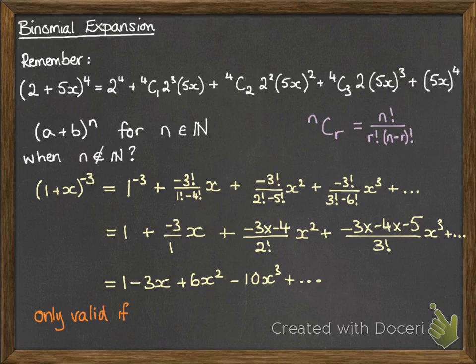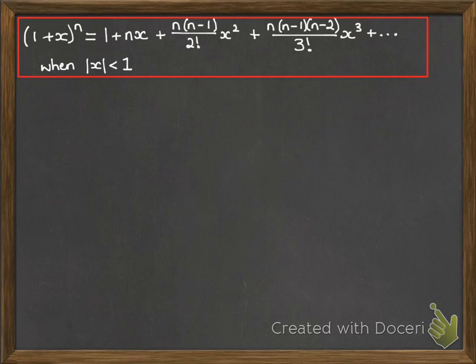Now we had restrictions on it last year, we have restrictions on it this year as well. This is only valid if the modulus of x is less than 1, because those higher powers of x need to become insignificant for us to be able to ignore them. So like the 10x cubed, and then whatever comes next as x to the power of 4, and so on. The general formula looks like this, and that's how it is on your formula sheet for you to be able to use it.